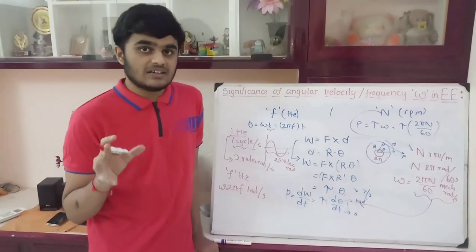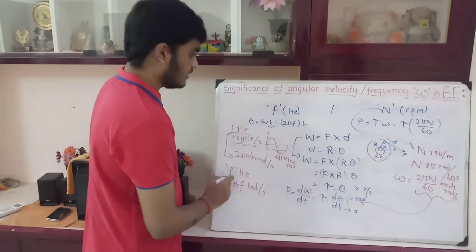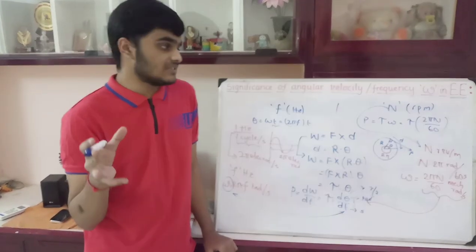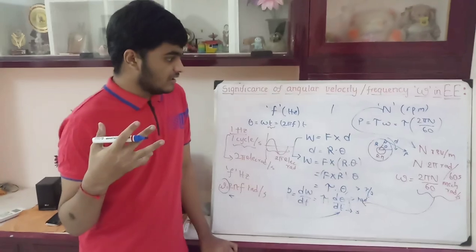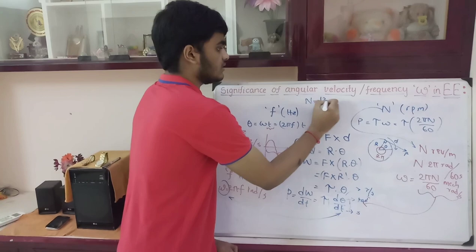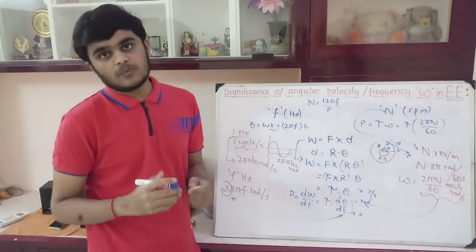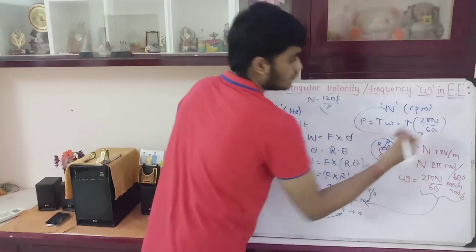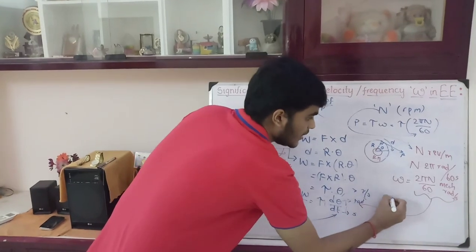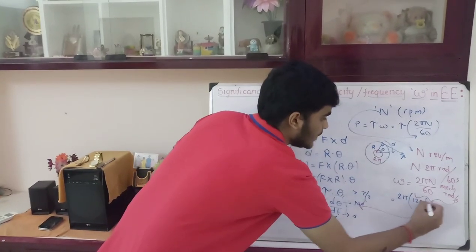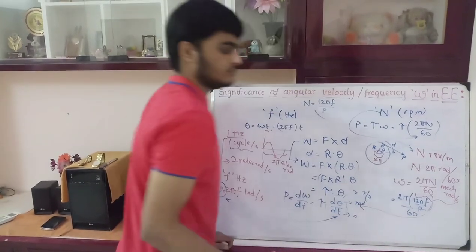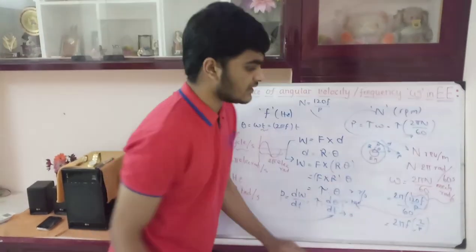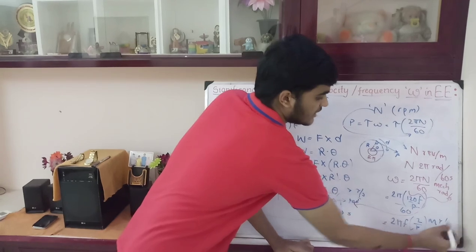Now the important thing to understand is that angular frequency omega and angular velocity omega are both the same — the basic difference is in the units. To understand this, consider the basic equation: the speed of the rotor is N = 120f/p, where p is the number of poles of the rotor. Substituting this N into the equation, we get omega = 2π × (120f/p) / 60, which gives 2πf × (2/p). Here, since it is in mechanical radians, this is also in mechanical radians per second.